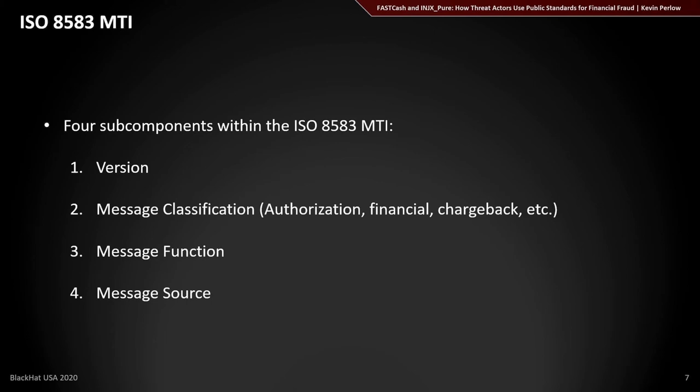The message type identifier has four parts: a version number as the first digit, a message classification, a message function, and finally the source of the message — indicating whether it originated from the bank, the ATM, or some other entity.